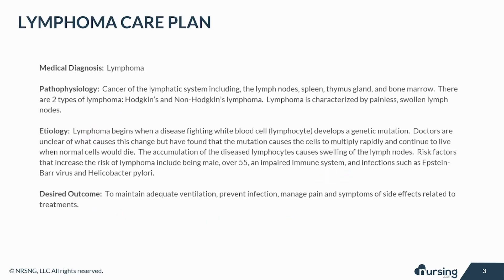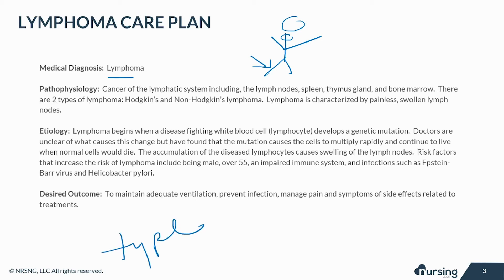Lymphoma is defined as cancer of the lymphatic system, including the lymph nodes, spleen, thymus gland, and bone marrow. There are two types of lymphoma: Hodgkin's and non-Hodgkin's lymphoma. They are classified as such depending on the type of cell involved. Treatment depends on the type and the severity. Lymphoma is characterized by painless, swollen lymph nodes.